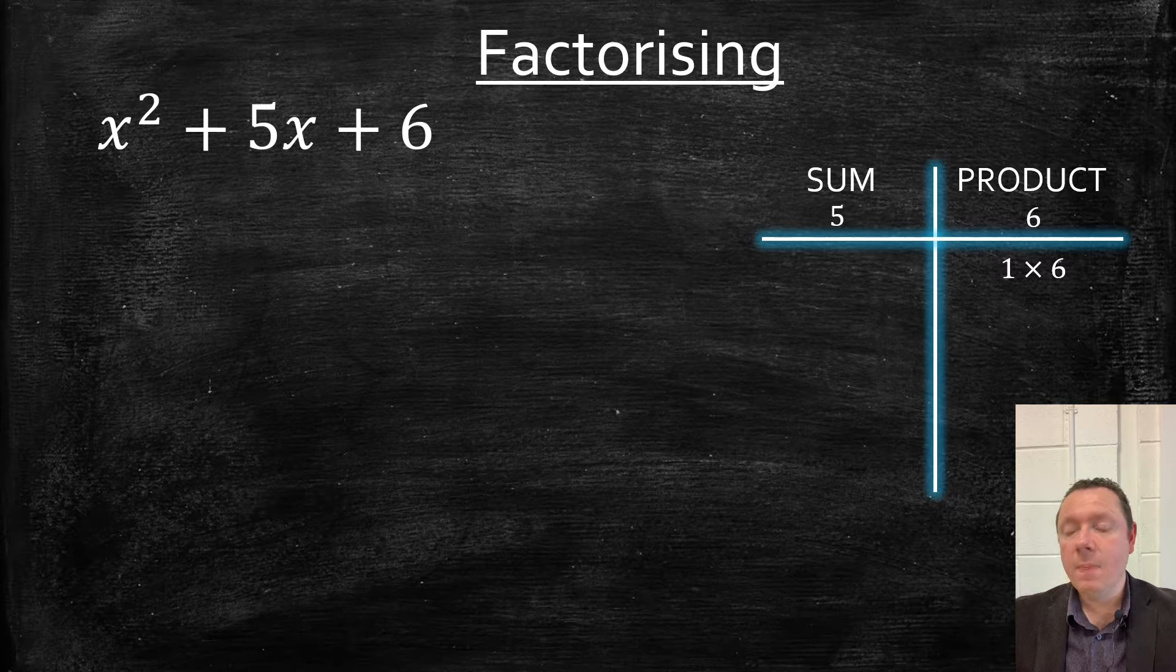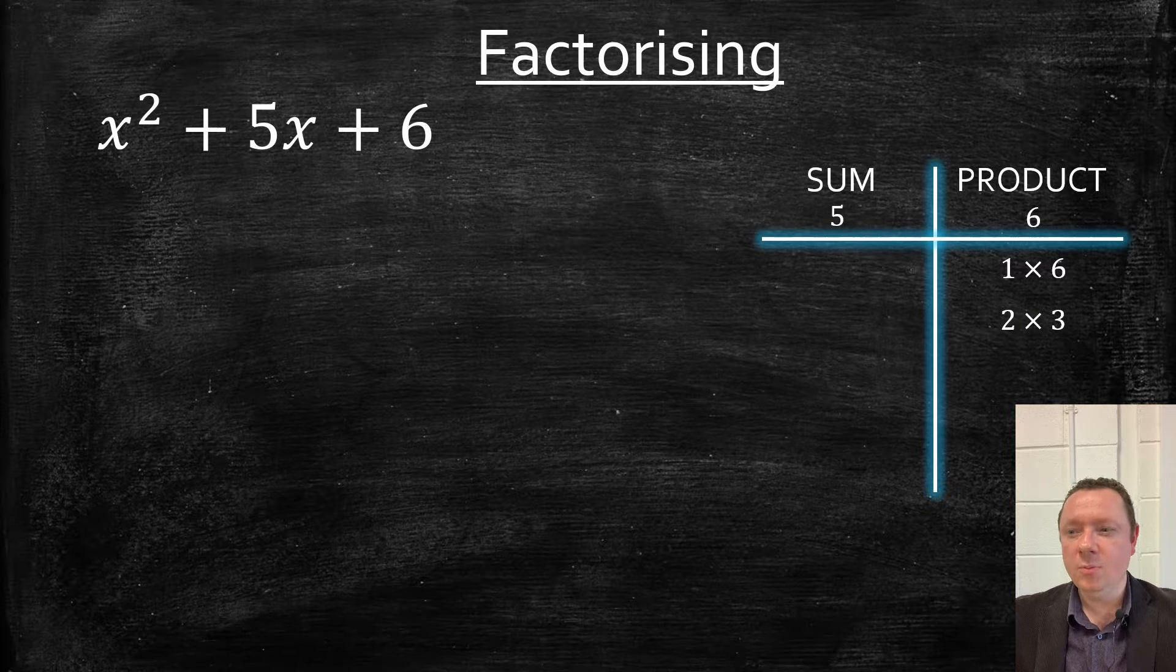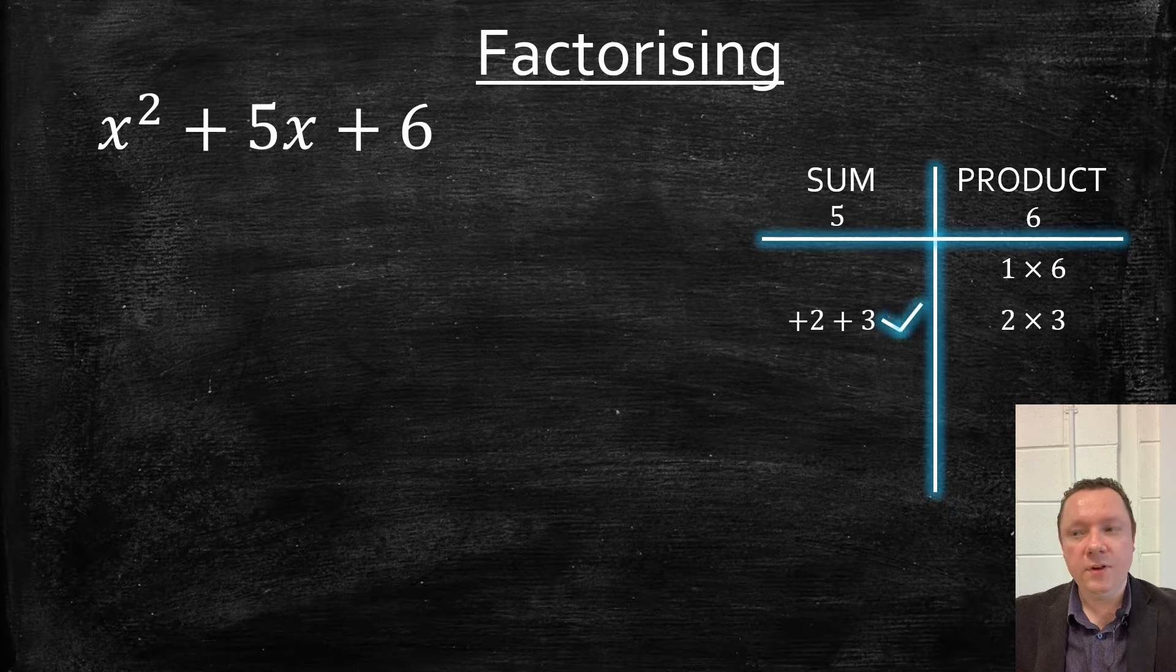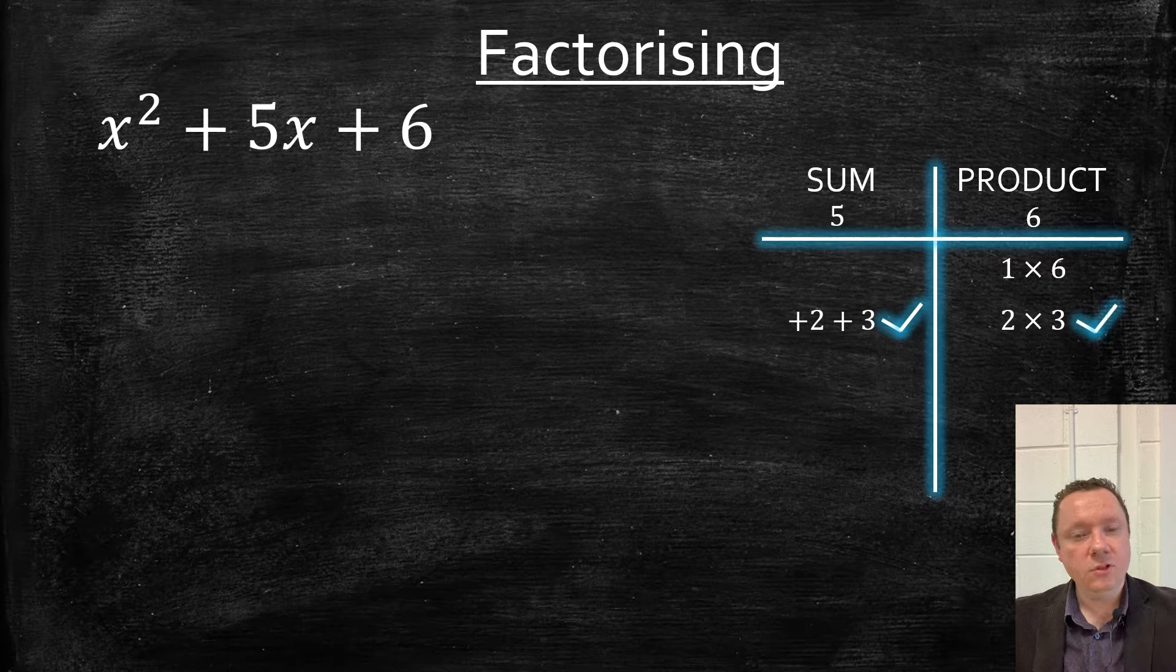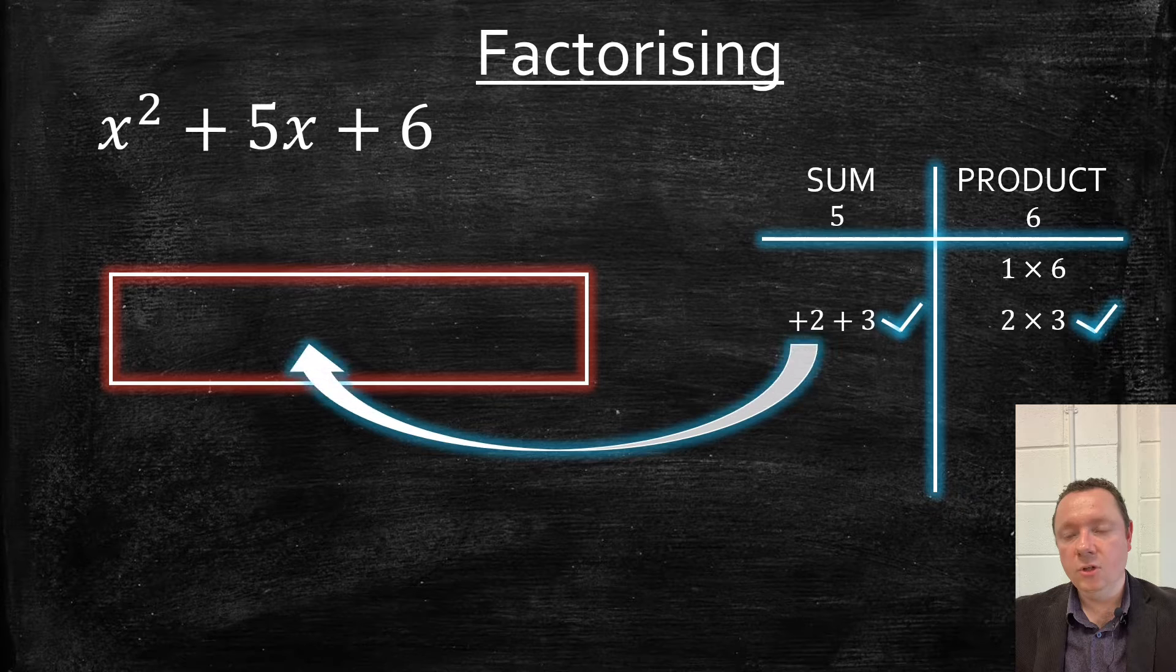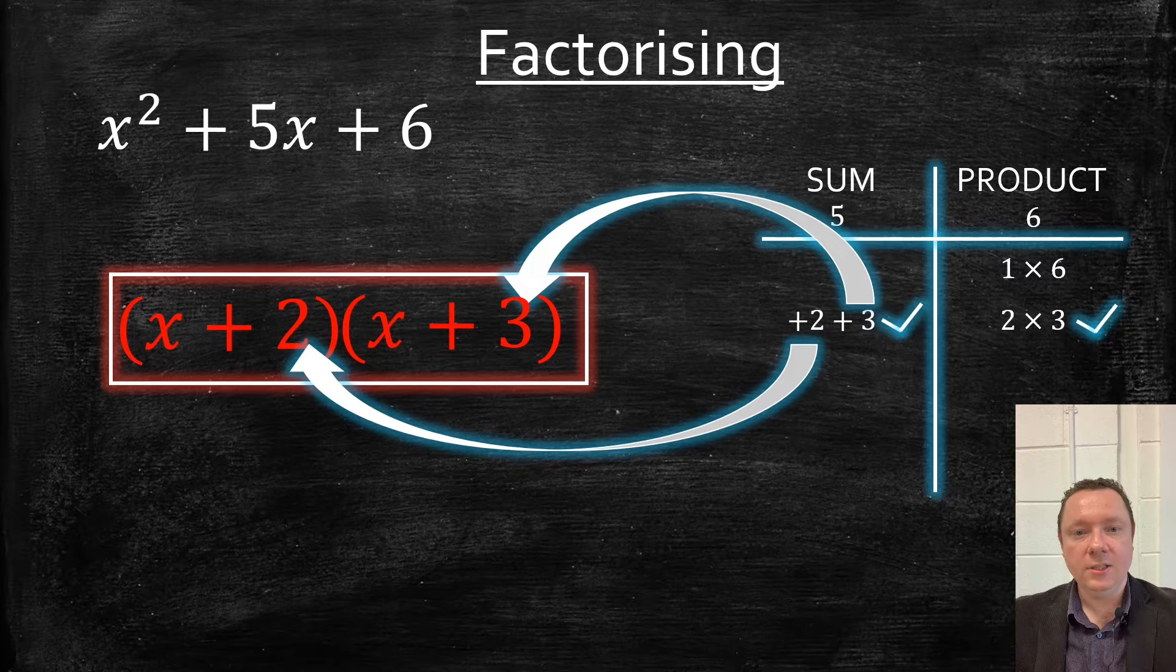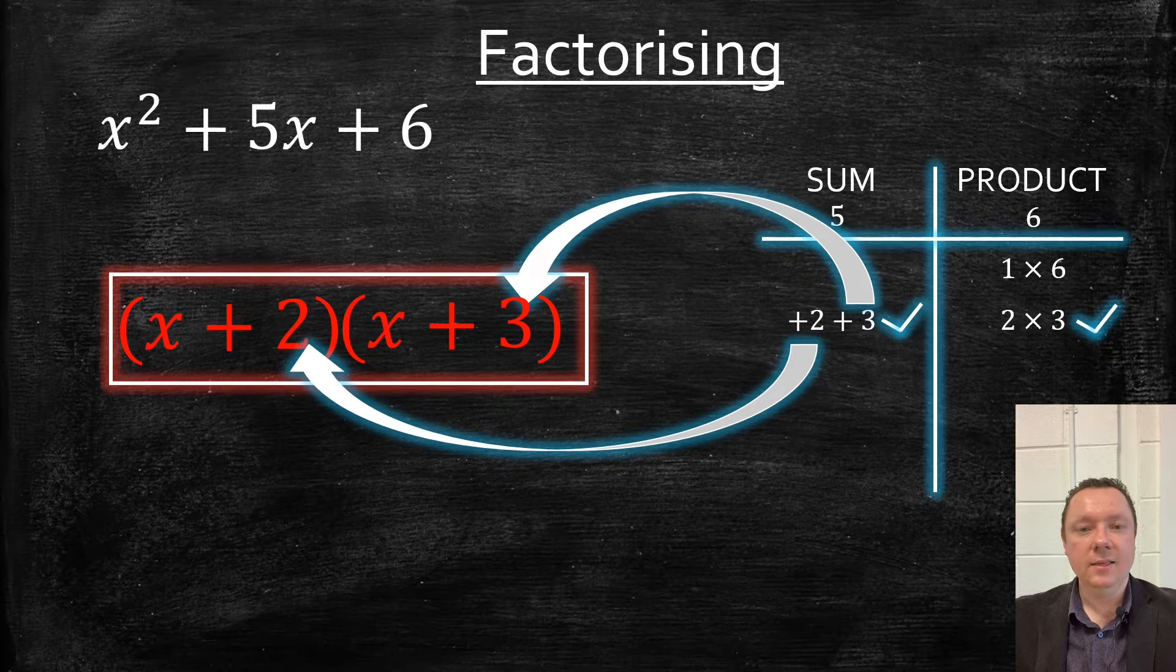Or I could have 2 times 3. And you should be able to see, plus 2 plus 3 makes 5. Plus 2 plus 3 is 5, 2 times 3 is 6. So that is our answer. Get our brackets. The 2 goes in one bracket, and the 3 goes in the other bracket. x in the first place, x add 2, x add 3. Nice and simple.